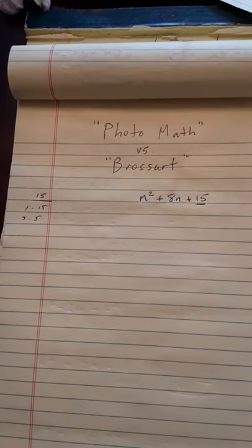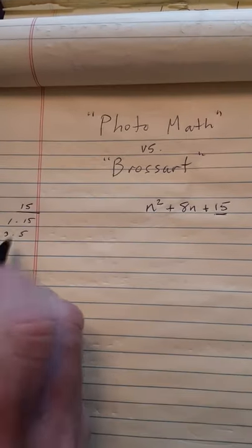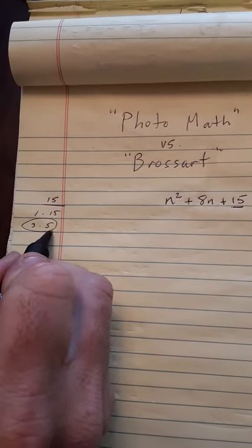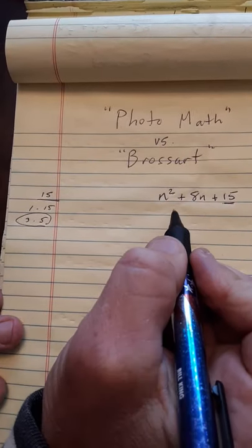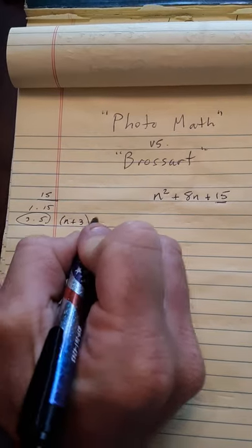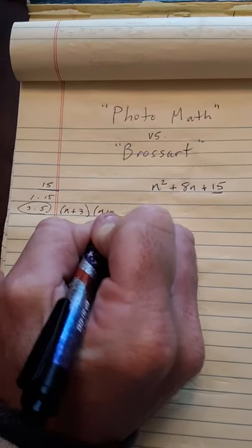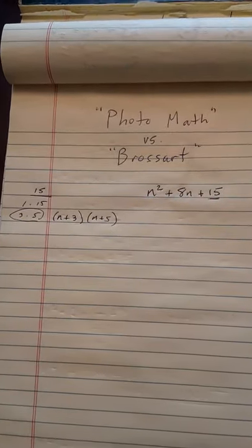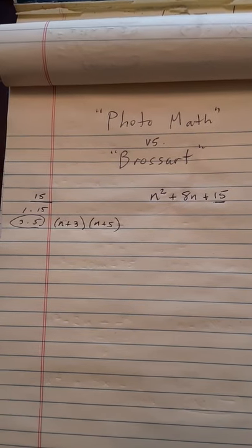And I've got to recognize that 3 and 5, if I added them, would give you 8. So I'm going to say that's going to be (n + 3) times (n + 5). And it took me just a couple minutes to do that.